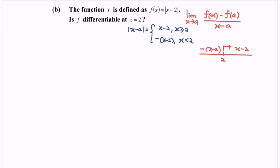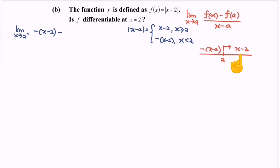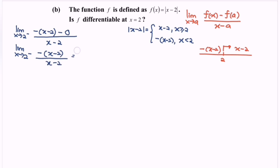Is the function differentiable at x = 2? Here a = 2. For the left-hand limit, as x approaches 2 from the left, f(x) = -(x - 2) (from the number line), and f(2) = 0. So we compute: lim(x→2⁻) [-(x - 2) - 0] / (x - 2) = lim(x→2⁻) -(x - 2)/(x - 2), which simplifies to -1.